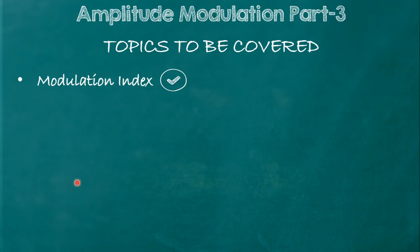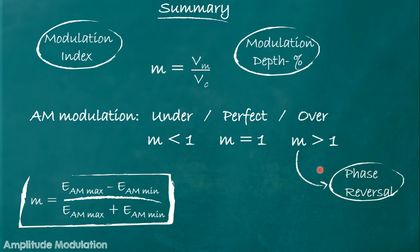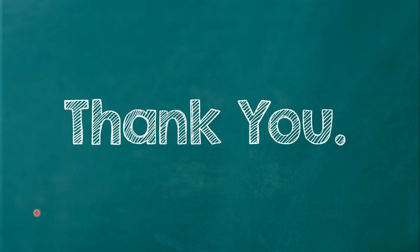Here we completed the modulation index. In summary, modulation index is the ratio vm/vc where vm is the peak of the information signal and vc is the peak of the carrier signal. When expressed as a percentage it is called modulation depth. We covered three cases: under modulation (m < 1), perfect modulation (m = 1), and over modulation (m > 1). Phase reversal occurs in over modulation, so it is generally avoided. If vm and vc are not known individually, the modulation index can still be found from the maximum and minimum values of the AM envelope using the formula m = (E_am_max − E_am_min) / (E_am_max + E_am_min). Thank you.